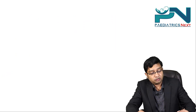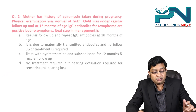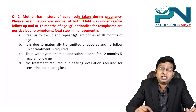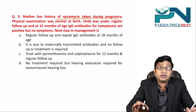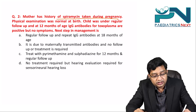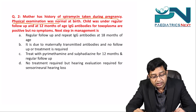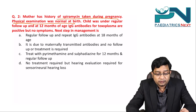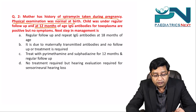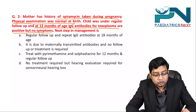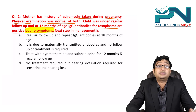Question two: a mother has a history of spiramycin taken during pregnancy, indicating she was diagnosed with toxoplasma during pregnancy. Physical examination was normal at birth. At 12 months of age, IgG antibodies for toxoplasma are positive but there are no symptoms. The question asks for the next step in management.